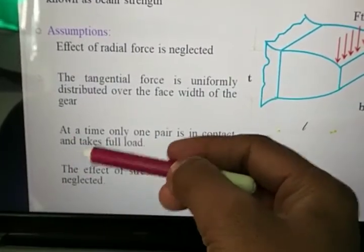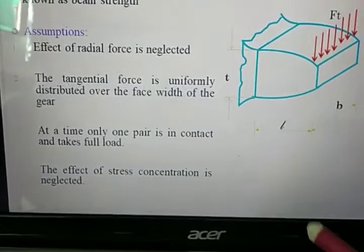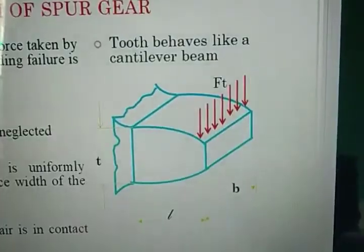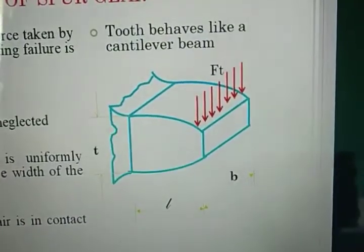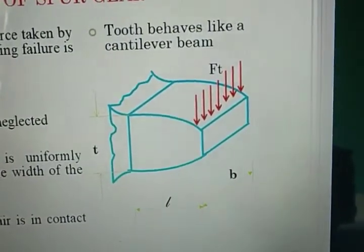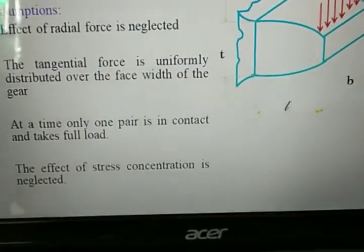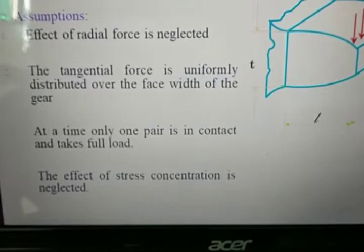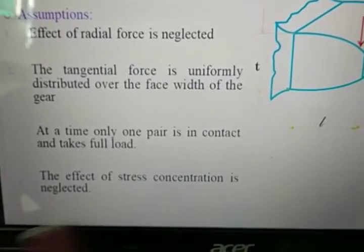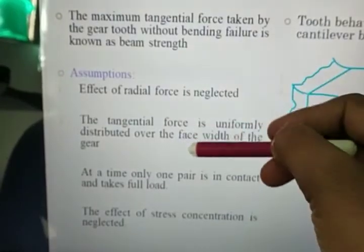Again, the next assumption is at a time only one pair is in contact and takes a full load. So while studying this beam strength equation, the third assumption is that at a time only one pair is in contact and that one pair takes whole load while gear is in rotation. Then last assumption is effect of stress concentration is neglected.